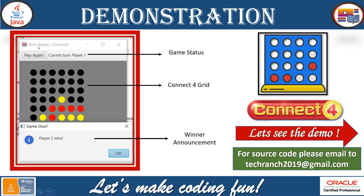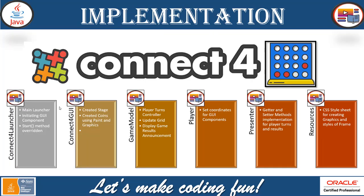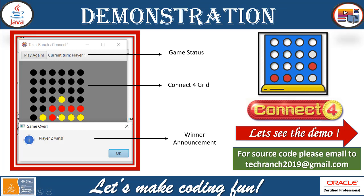The game will look like this: we have a button to play again, and a label showing the game status — for example, that the current player is Player 1. Once Player 1's turn is done, Player 2 takes their turn. You can also choose and repaint the colors in the Connect 4 GUI class, where the coins are created using paint — you can use green, blue, black, white, or any color you want.